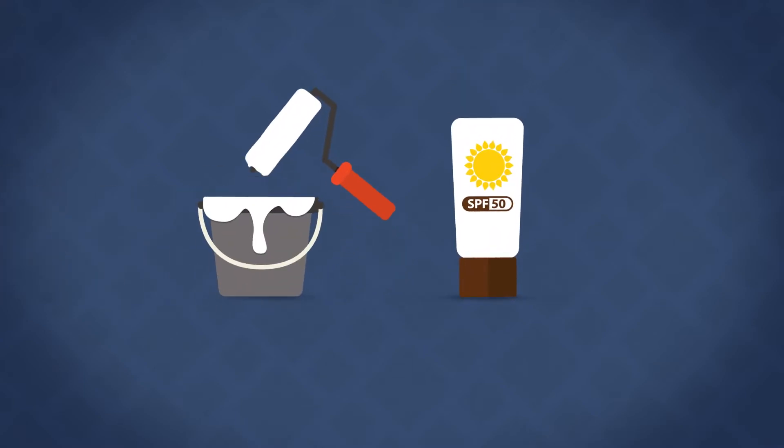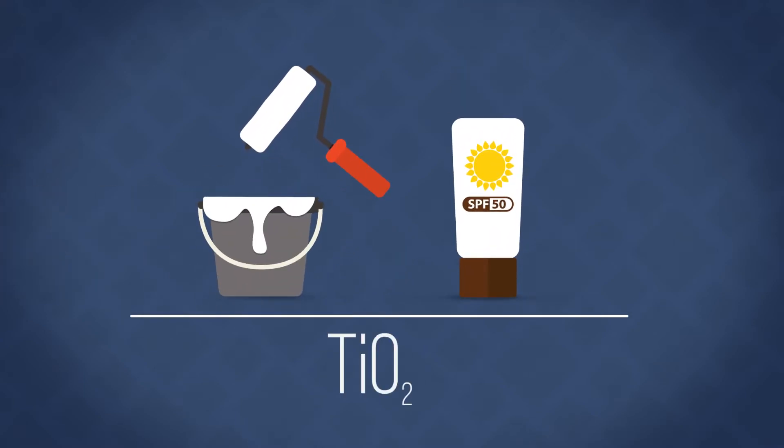Whether you're painting a wall or applying sunscreen, the chances are titanium dioxide is involved. But what is this substance and why is it so widely used?